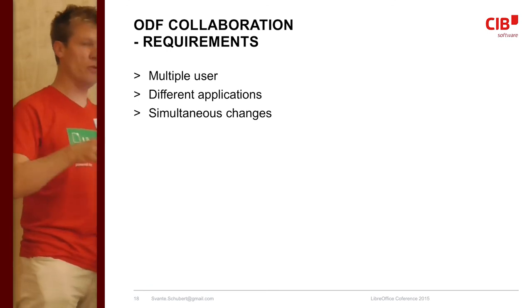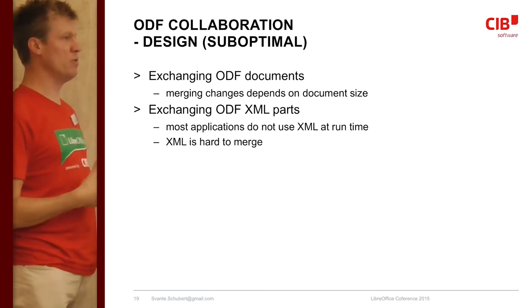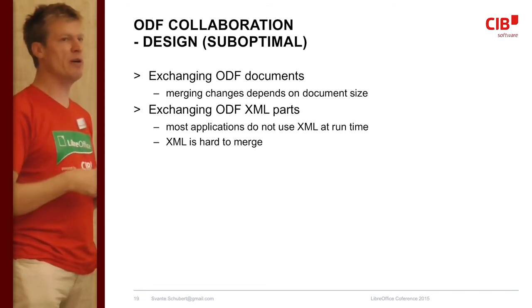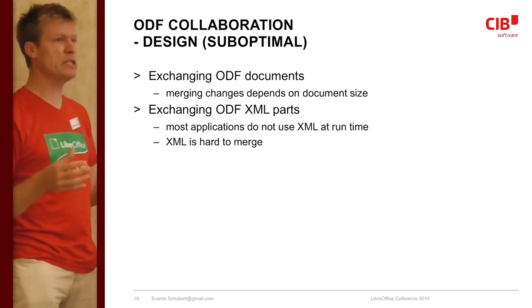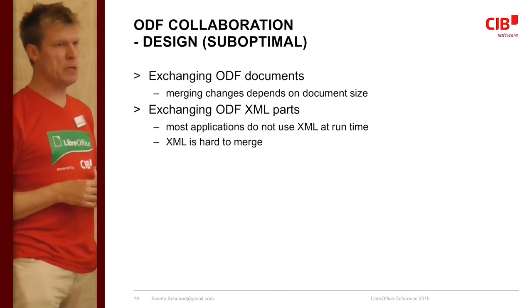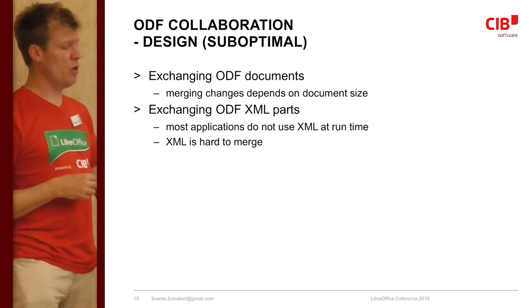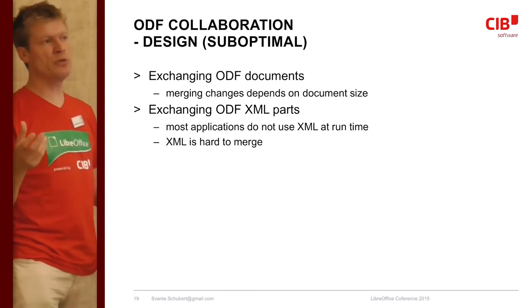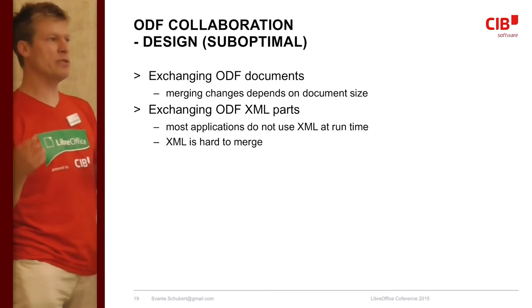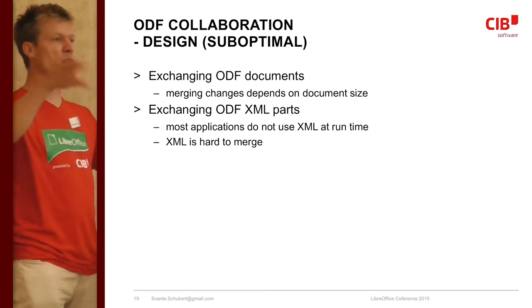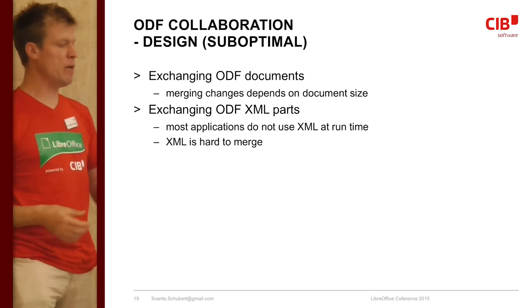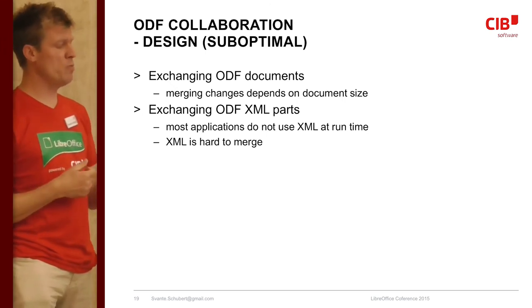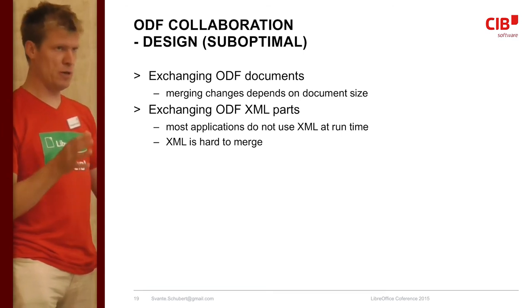The easy way to handle collaboration today is to exchange files by email. But this becomes very difficult because merging depends on document size — with a very large document and many changes, finding what was changed is hard. Also, different applications save documents differently, creating noise. Some remove all spaces and put everything on one line, some add line breaks, some have differently nested elements, and even XML prefixes can change. You may need to normalize everything to make comparison easier.